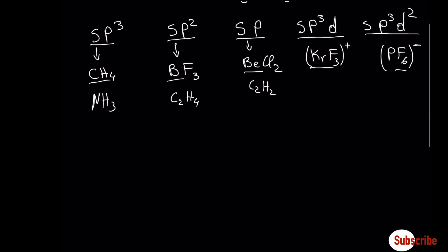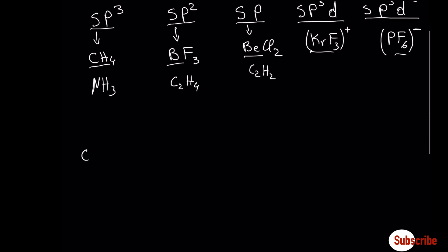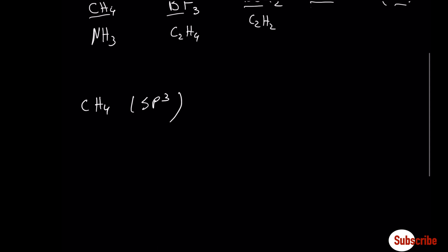Let's start with the first example: methane, which has sp3 hybridization. First, we have to draw the Lewis structure for methane. Second, we have to write the electronic configuration for the central atom, in this case carbon.